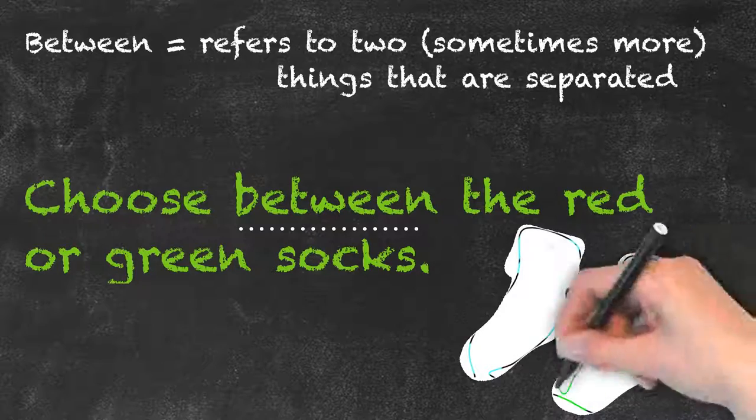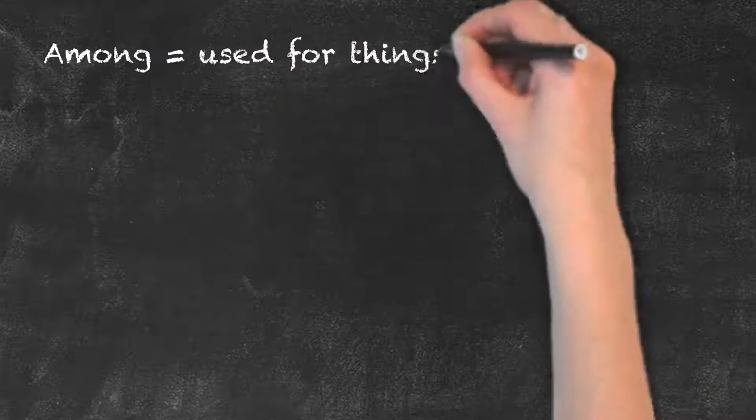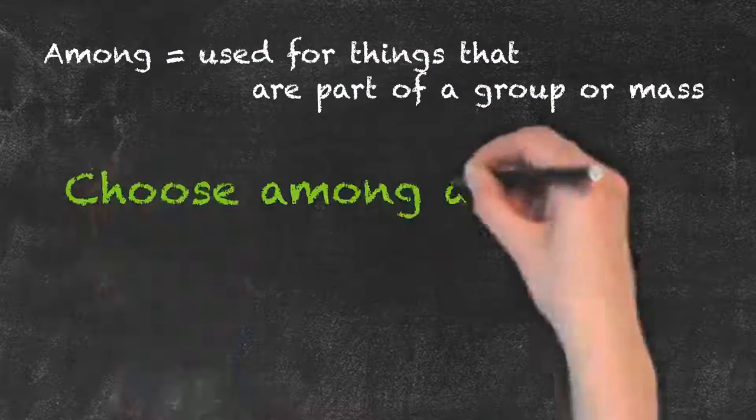For example, choose between the red or green socks. The word 'among,' however, is used for things that are not separated but instead are part of a mass or a group.